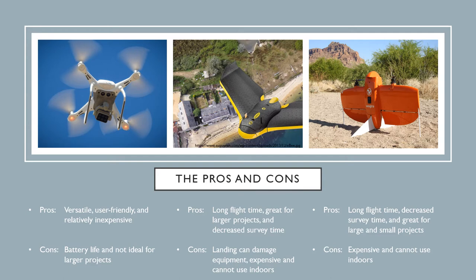In the middle here we have an Eevee, which is a fixed wing. Pros: very long flight time, great for large projects, and it decreases the amount of time collecting imagery on-site. A major con is having to throw the aircraft to get it into flight, which can be quite daunting and scary for new pilots. Landing is also risky — the camera is on the bottom, so when you land on the ground you can damage the camera, break off the nose or wing, especially in wind. Fixed wings are also expensive and cannot be used indoors.